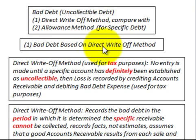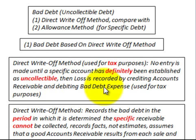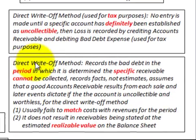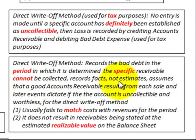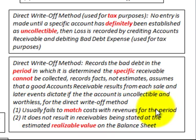For bad debt using the direct write-off method — which is used for tax purposes — no entry is made until a specific account has definitely been established as uncollectible. Then the loss is recorded by crediting accounts receivable and debiting bad debt expense. This method records bad debt in the period it is determined uncollectible; it records facts, not estimates. However, it usually fails to match costs with revenues for the period, and it does not result in receivables being stated at estimated realizable value on the balance sheet.